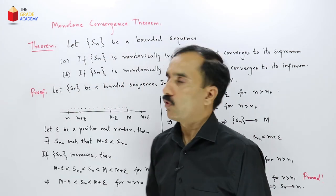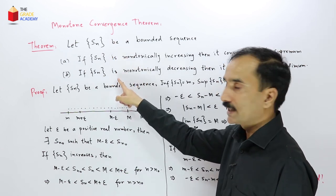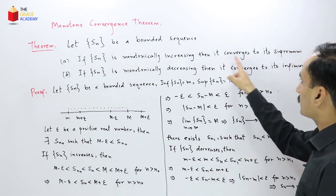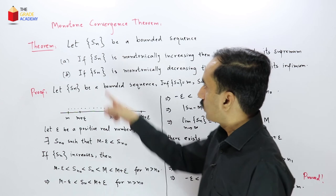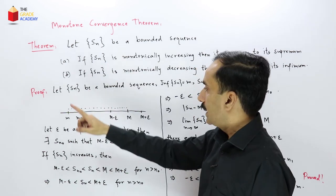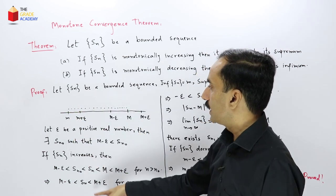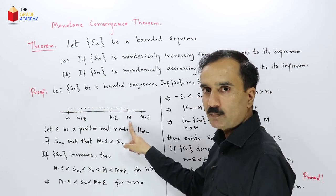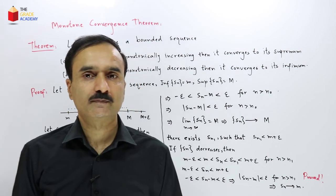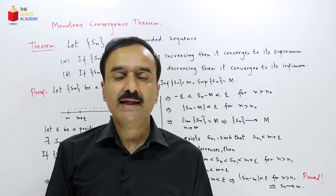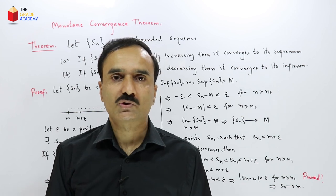So here the Monotone Convergence Theorem states that a bounded sequence converges if it is monotonically increasing or decreasing: if monotonically increasing it converges to its supremum, and if monotonically decreasing it converges to its infimum. We took our sequence SN, which is a bounded sequence having an infimum and a supremum, and proved both cases. So that was the proof. In the next lecture we will talk about Cauchy sequences and related theorems. See you in the next lecture.